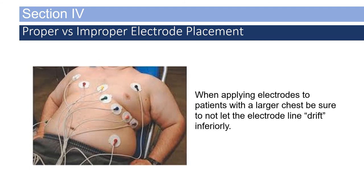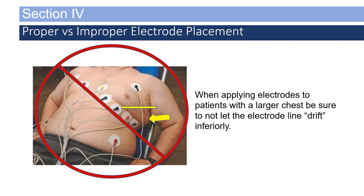This image is another example of improper electrode placement. You can see the leads drift down from the correct line, and the difference between V4 and V6 is clear in this photograph. For all paramedics: the significance of V4 being in the right anatomical position is paramount, as you have the ability to needle decompress somebody at the fifth intercostal space at the anterior axillary line. At minimum, all paramedics should be getting V4 correct.